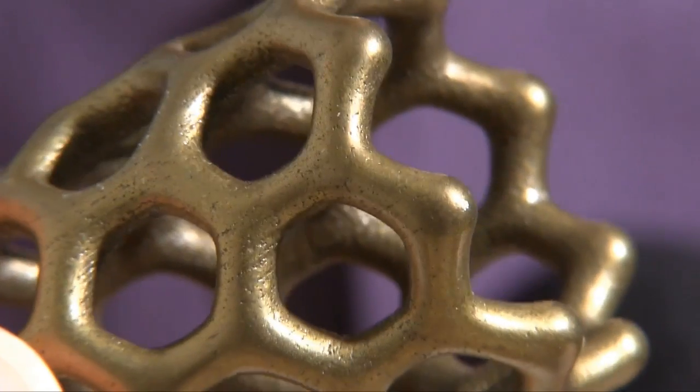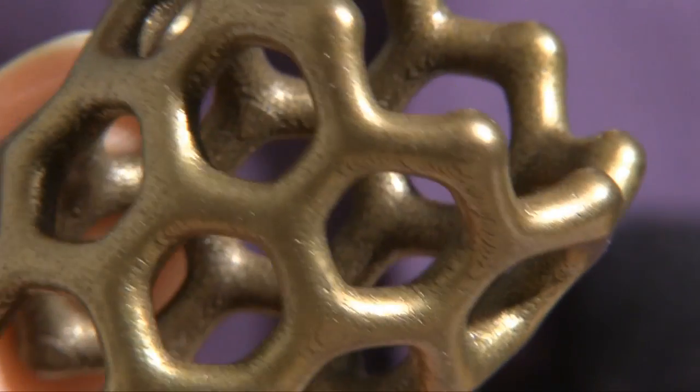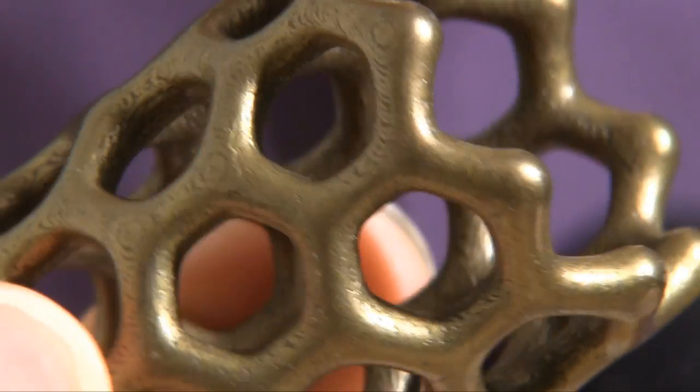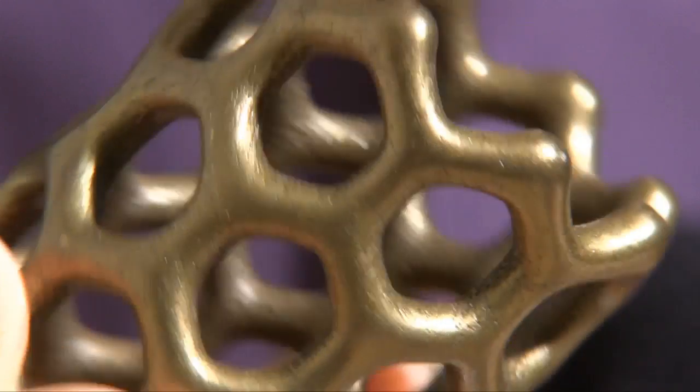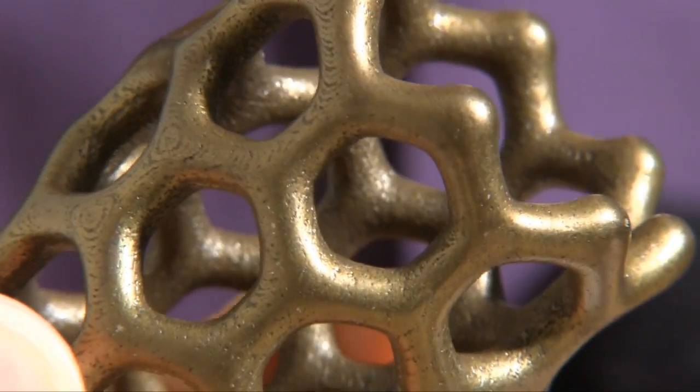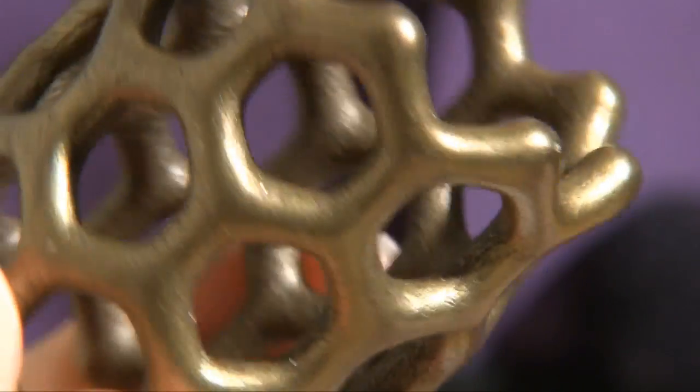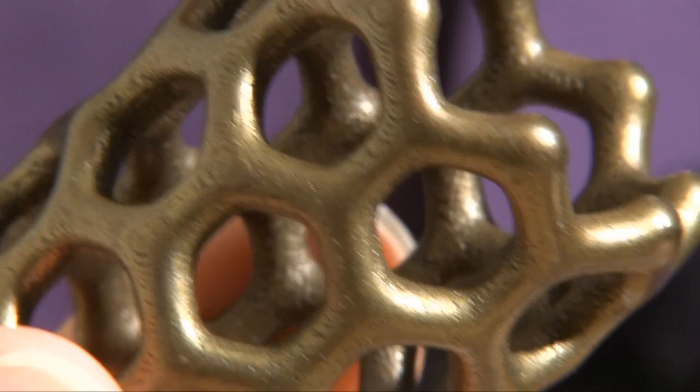As you can see the surface quality really is very, very good. This is produced by laying down layers of a powder of stainless steel, binding those layers of powder and then infusing the final object with bronze. So there's no indications of stepping or anything else on this model. It really is just a piece of, on the surface it looks like solid metal.